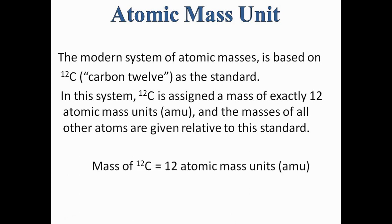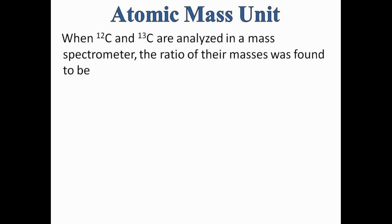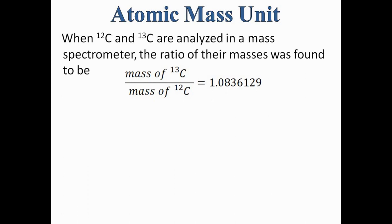The mass of carbon-12 is defined as exactly 12 atomic mass units or AMU. When C12 and C13 are analyzed in a mass spectrometer, the ratio of their masses was found to be 1.0836129. So the ratio of the mass of C13 with respect to the mass of C12 gives the value of 1.0836129.